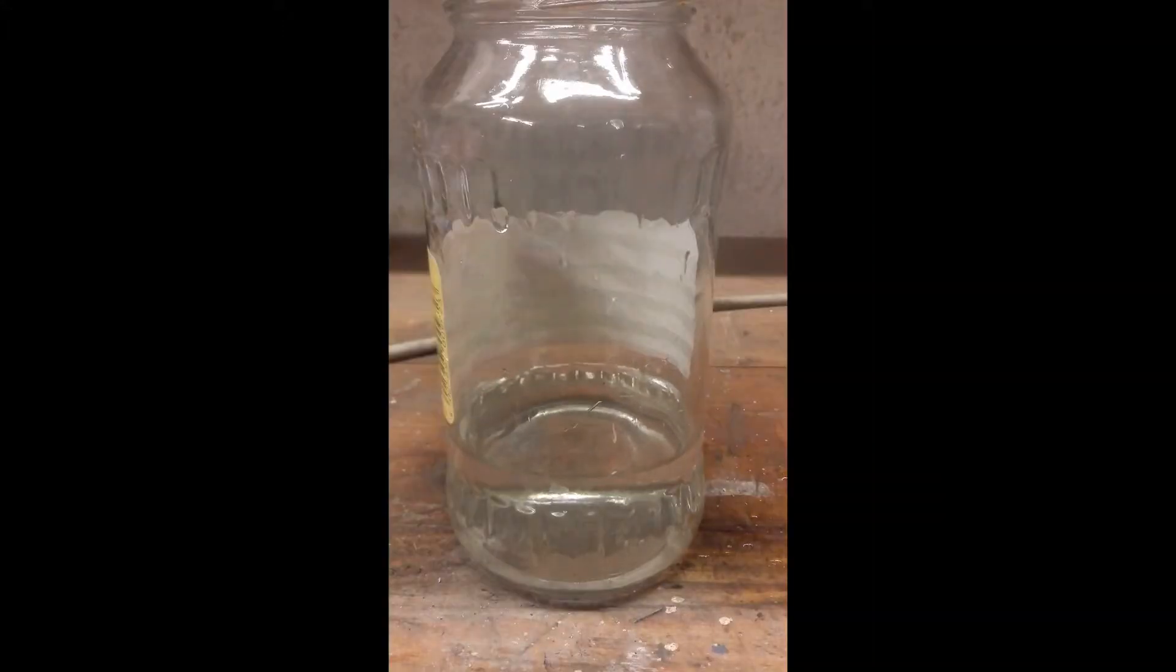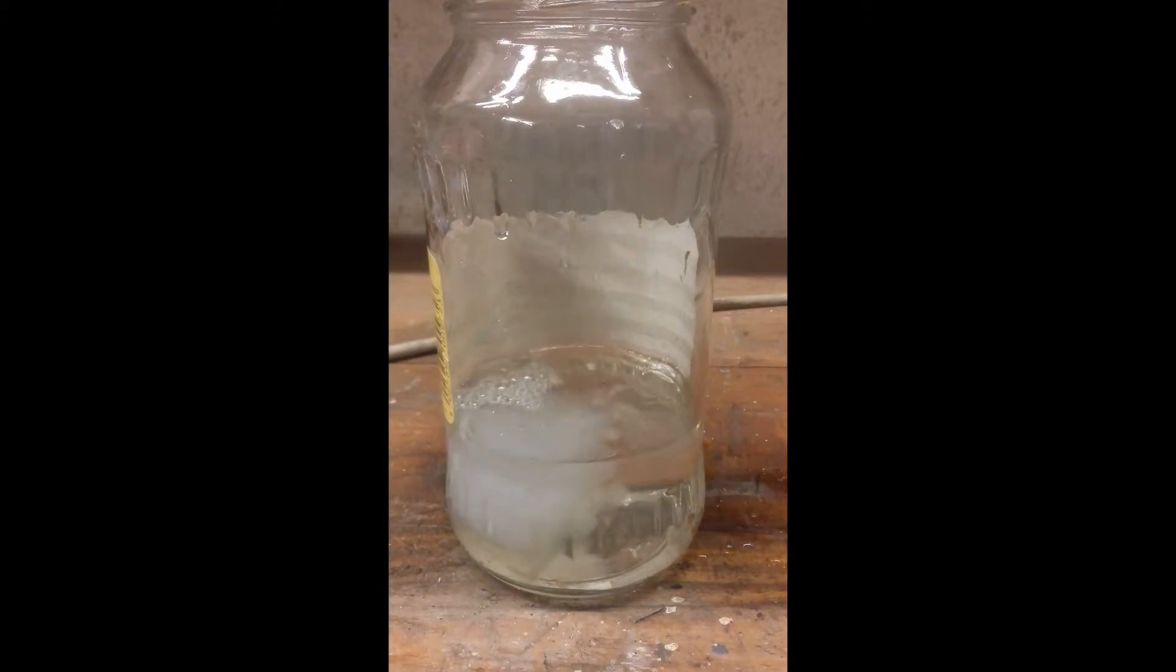Now, add the acid into the jar. A precipitate will form, it is silicon dioxide or silicic acid. We will convert it later to silicon dioxide if it's silicic acid.